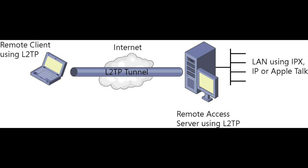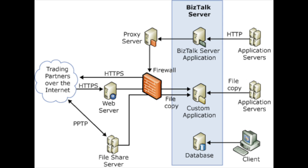Layer 2 Tunneling Protocol, L2TP, is used to facilitate virtual private network connections over existing networks. Because L2TP doesn't provide any encryption mechanisms, it's regularly used together with IPSec. Internet Protocol Security, IPSec, is an addition to the standard IP layer that allows two or more hosts to communicate securely by encrypting individual packets. This protocol is able to verify data integrity and is thus suitable for mission-critical applications.